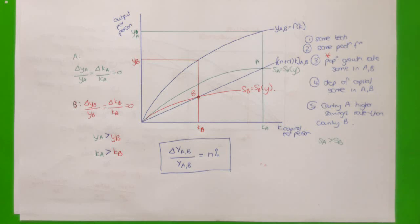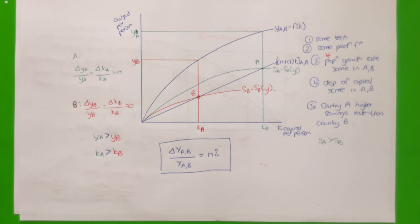In summary: absolute convergence is a very restrictive state — everything has to be the same across two countries, and they will eventually reach the same steady state equilibrium, sharing the same levels of output per person and the same output growth rates, once the poorer country has caught up to the richer one. Conditional convergence is possible if countries share the same population growth rates but have different savings rates, or if they share the same population growth rates but have different depreciation rates of capital.